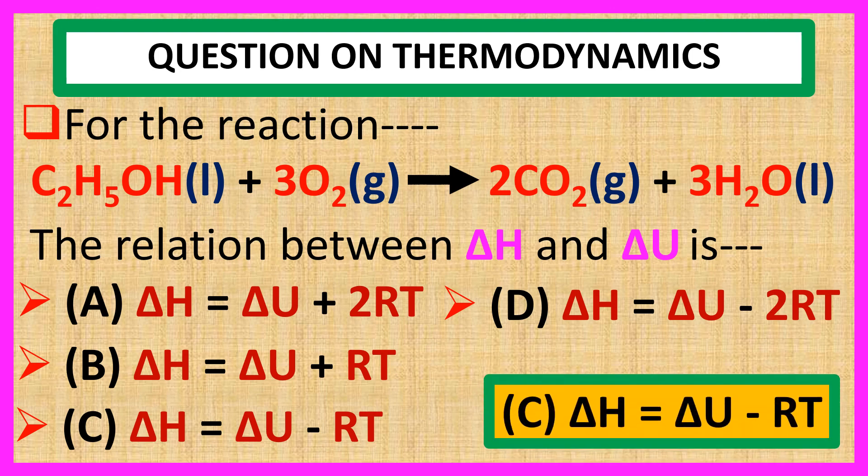Answer is C: del H is equal to del U minus RT. Explanation we will see in the next slide.